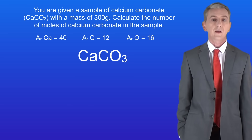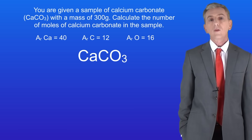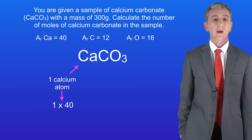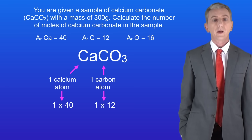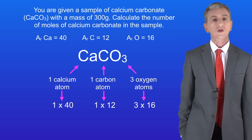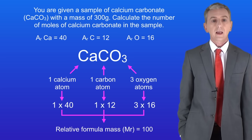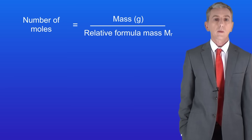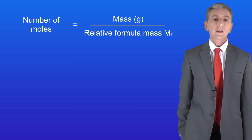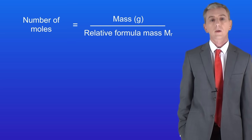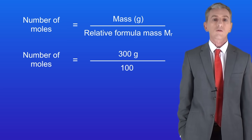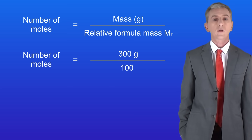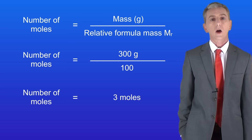Calcium carbonate has the formula CaCO3. We've got one atom of calcium with a relative atomic mass of 40, one atom of carbon with a relative atomic mass of 12, and three atoms of oxygen with a relative atomic mass of 16 each. Adding all of these together gives us a relative formula mass of 100. Dividing the mass of 300 grams by the relative formula mass of 100 means that we have 3 moles of calcium carbonate.